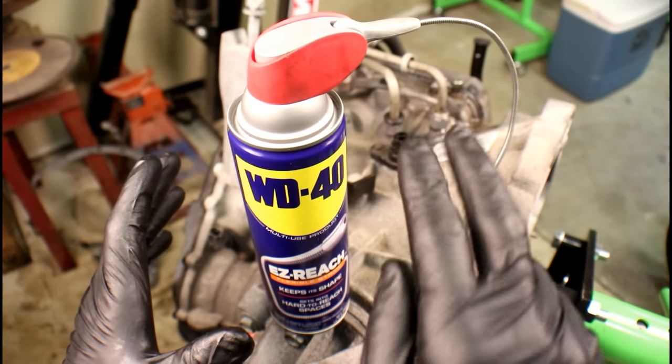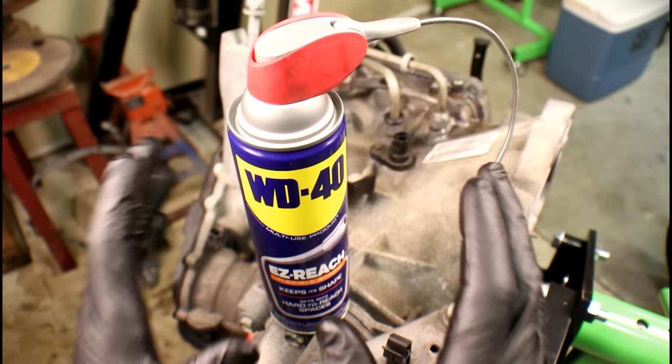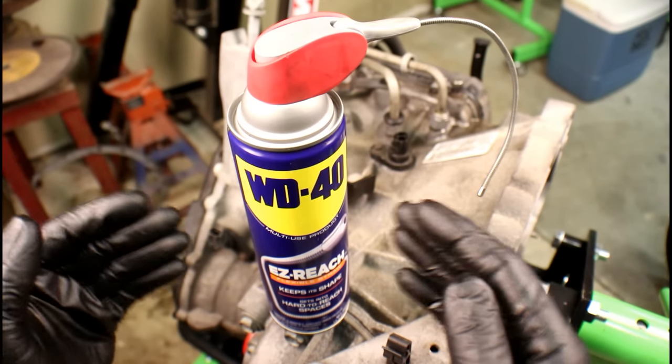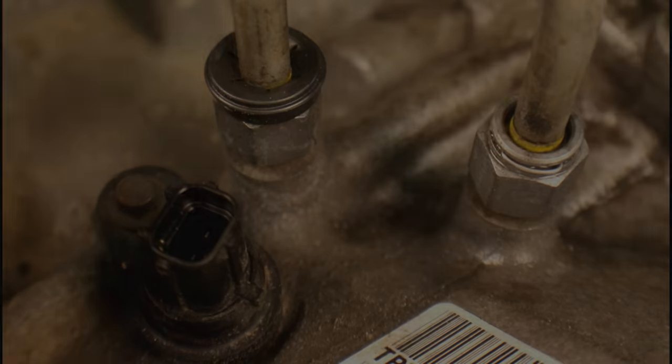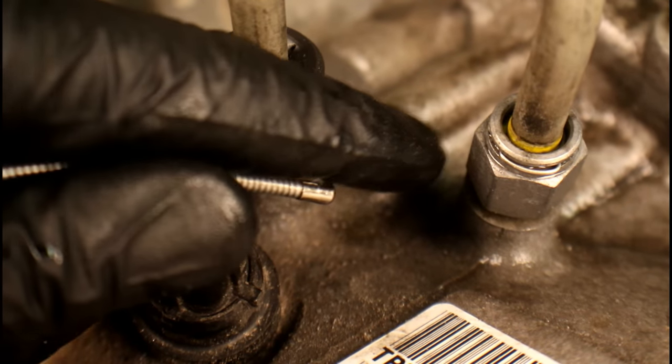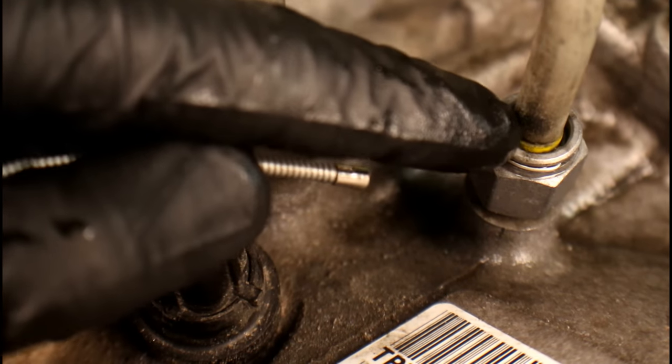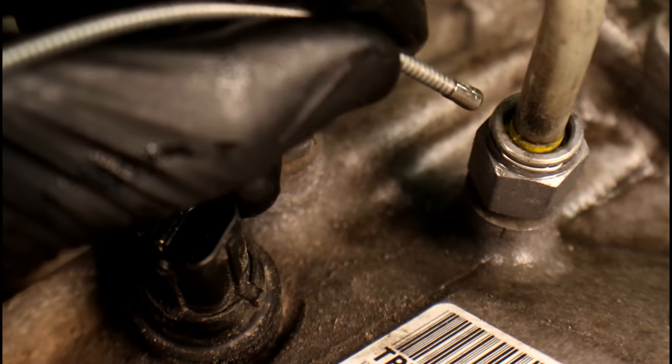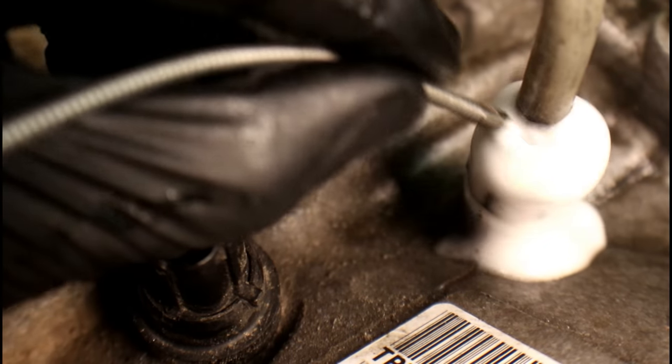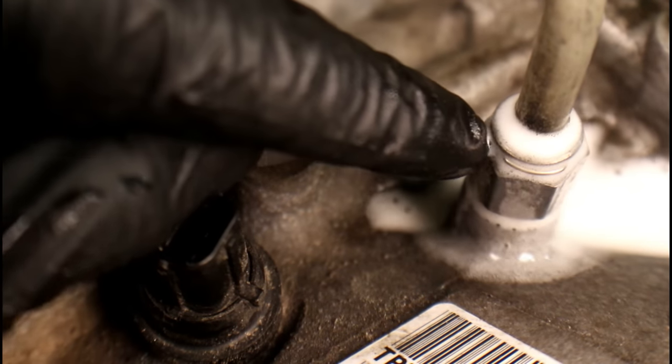Now once those plastic caps have been removed from the quick disconnects, grab some kind of spray lubricant such as WD-40. The WD-40 is going to do two things. Number one, it's going to help lubricate the spring to help it come off and also it's going to rinse any kind of dirt or debris that's in there. So just soak it down pretty good and now we can actually work on getting that clip off.